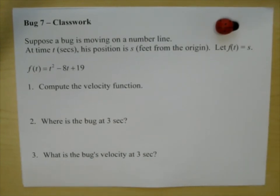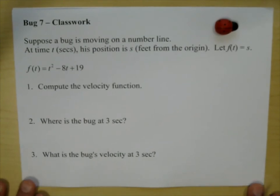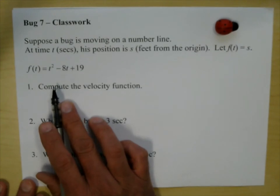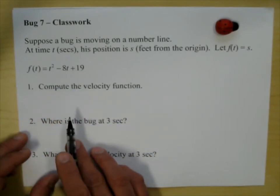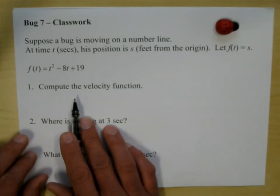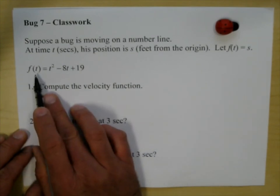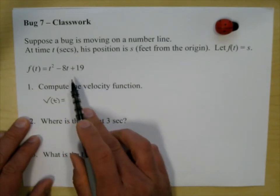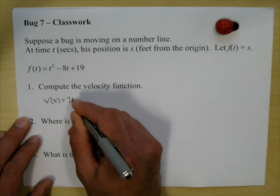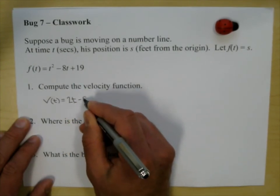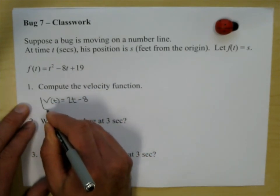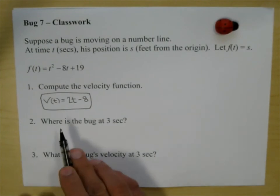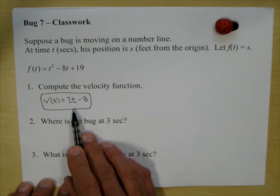A lot of these problems will look very familiar. When we do total distance traveled or average velocity, we don't have to do dq because dq is built into the shortcuts. There is the position function. Compute the velocity function. The velocity function is the derivative f prime, but because it's the velocity function I'm going to call it v. So v of t equals 2t minus 8.